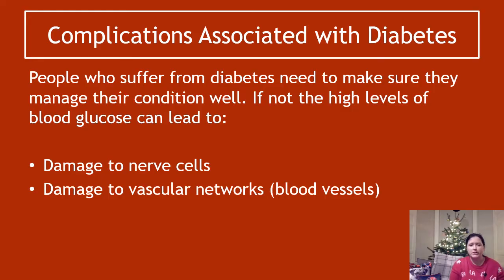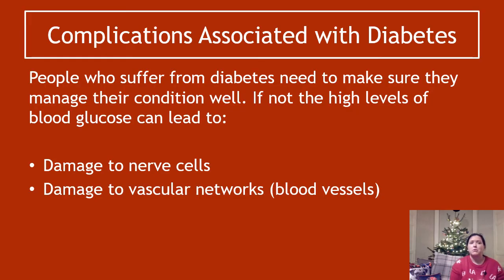Or maybe there are other genetic factors. If you yourself are diabetic, this does not mean it's going to happen to you — it means that if your condition is not managed well, these are things that might occur. So things that can happen include damage to nerve cells and damage to vascular networks — blood vessels.